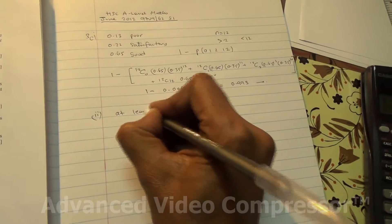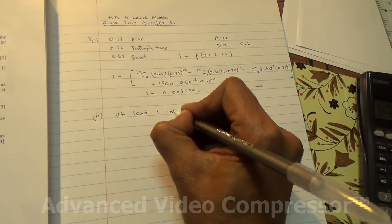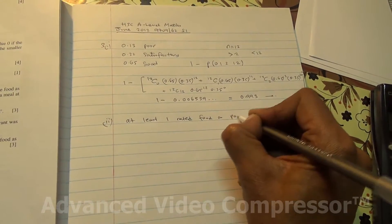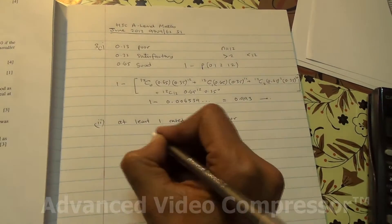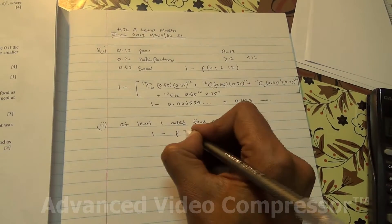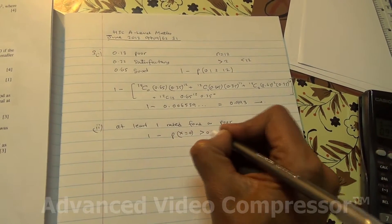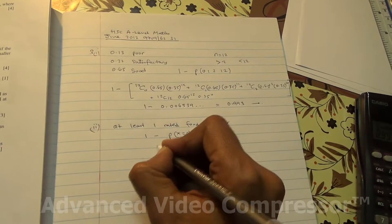At least one rated food as poor means one minus the probability that zero person will rate the food as poor. So therefore, and that is greater than 0.95 as given in the question. So therefore,